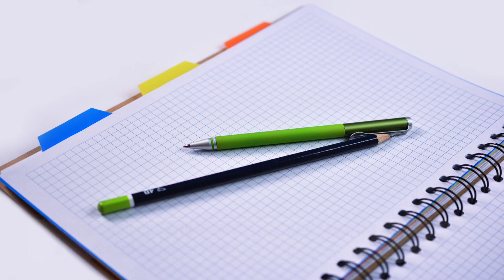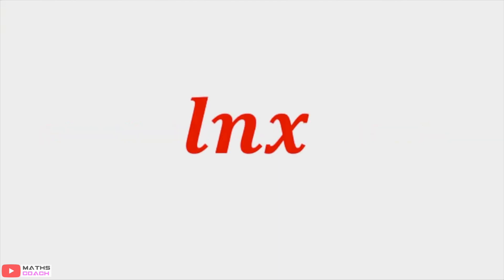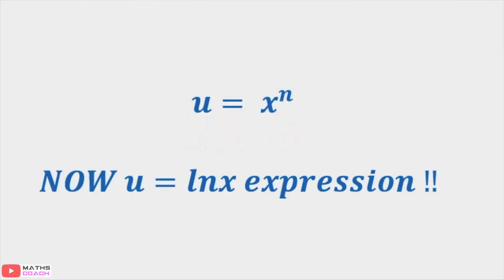Today we're going to look at the exceptions that arise when defining u and dv/dx. This would normally occur when dealing with the natural log ln x. Under normal circumstances we define u by the expression involving x to power n. However, if ln x is an expression in your question that requires integration by parts, we now need to define ln x with the letter u.